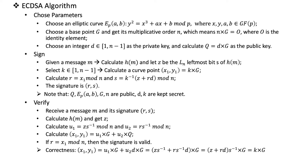Hello everyone, welcome to this video. Today we're going to talk about the ECDSA algorithm. ECDSA is short for Elliptic Curve Digital Signature Algorithm. A digital signature algorithm is used to verify the source of a message. Suppose user A wants to send a message to B — A will use their private key to sign that message and send it to B, and B can use A's public key to verify that the signature is valid, confirming the message is actually from A.